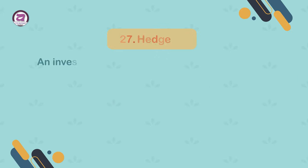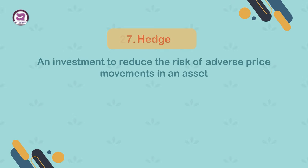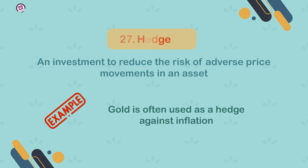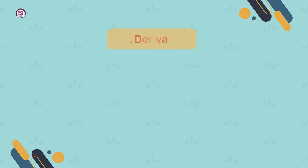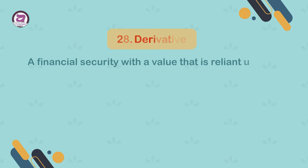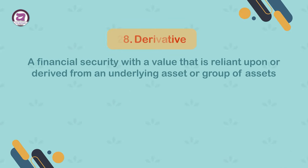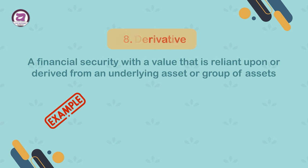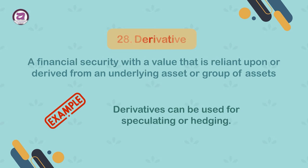27. Hedge. An investment to reduce the risk of adverse price movements in an asset. Example: gold is often used as a hedge against inflation. 28. Derivative. A financial security with a value that is reliant upon or derived from an underlying asset or group of assets. Example: derivatives can be used for speculating or hedging.